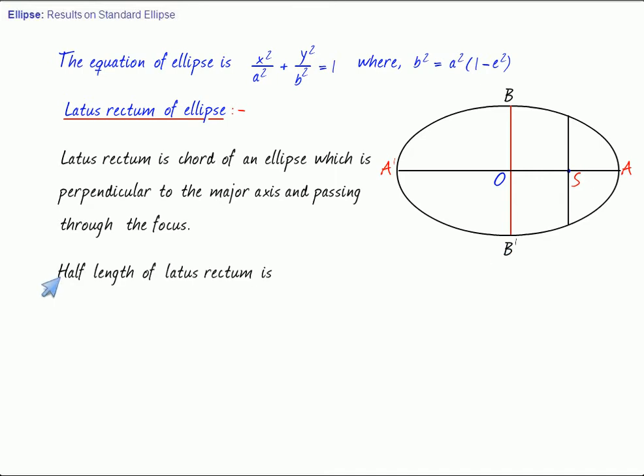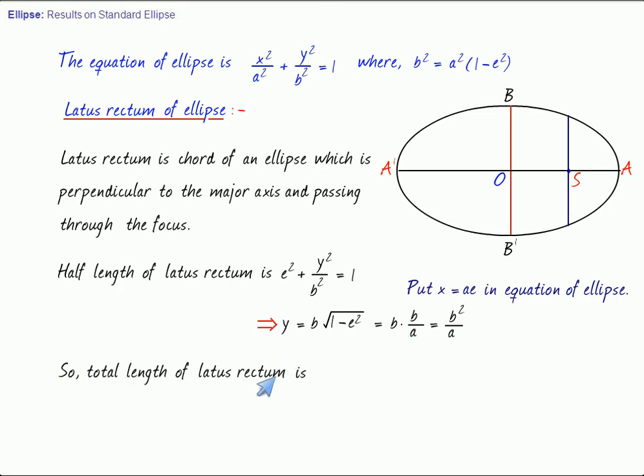The half latus rectum comes when we put x equals ae in the equation of the ellipse. We will get e square plus y square upon b square equals 1. So, y equals b under root 1 minus e square. But root 1 minus e square from here is b by a, so it is b square by a. So, the total length of the latus rectum is 2b square upon a. And the extremity of the latus rectum must be taken as ae, comma, b square by a.